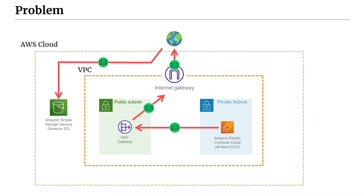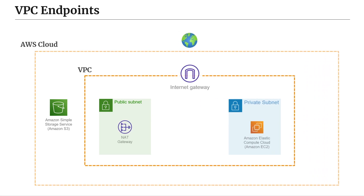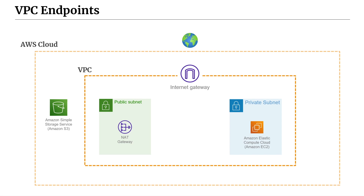So this is the problem that VPC endpoints attempt to solve. Let's take a look now at how we would do this using VPC endpoints, and how much simpler it is. With the same diagram, the first thing you'll note is that we do not need to speak to the public internet. The first thing we'd do is create a VPC endpoint. VPC endpoints are mapped to a particular AWS service, so if you want to talk to different AWS services, you need to create separate VPC endpoints. In our case, we would wire this up to S3.